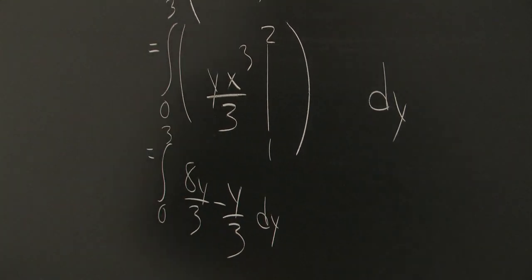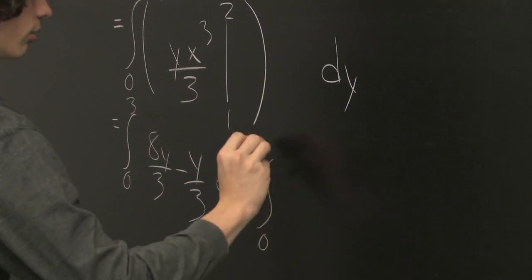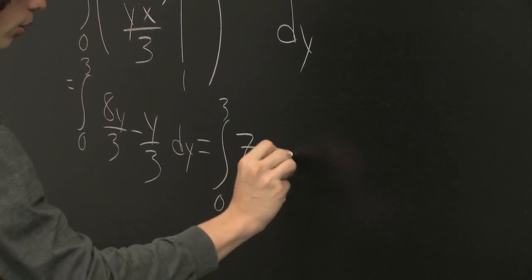And then we can simplify this a little bit. We get the integral from zero to three of 7y over three dy.